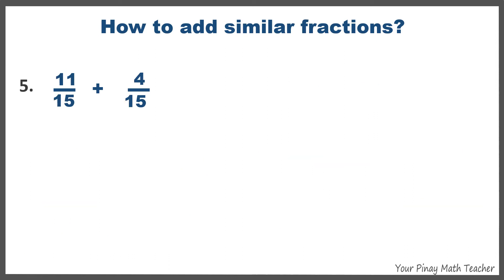Number five, 11 fifteens plus 4 fifteens is equal to 15 fifteens, which can be simplified to 1. And this is the final answer.